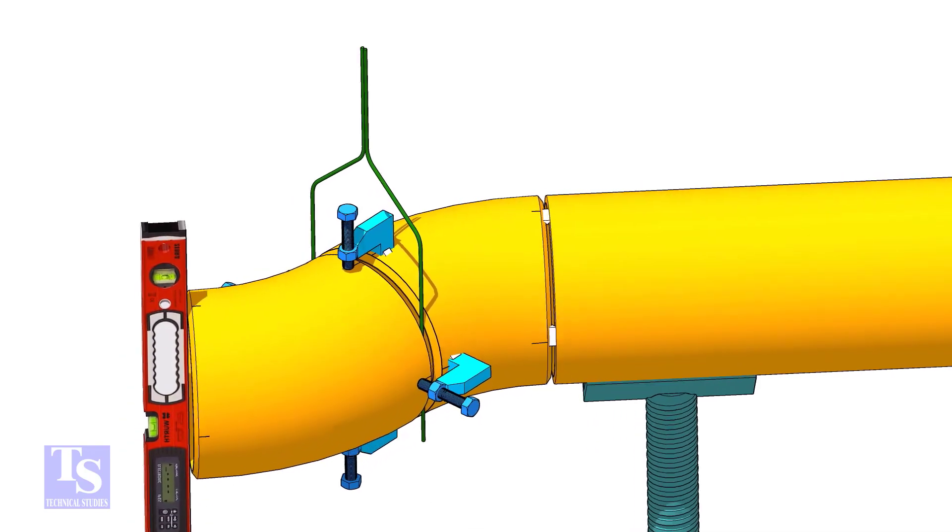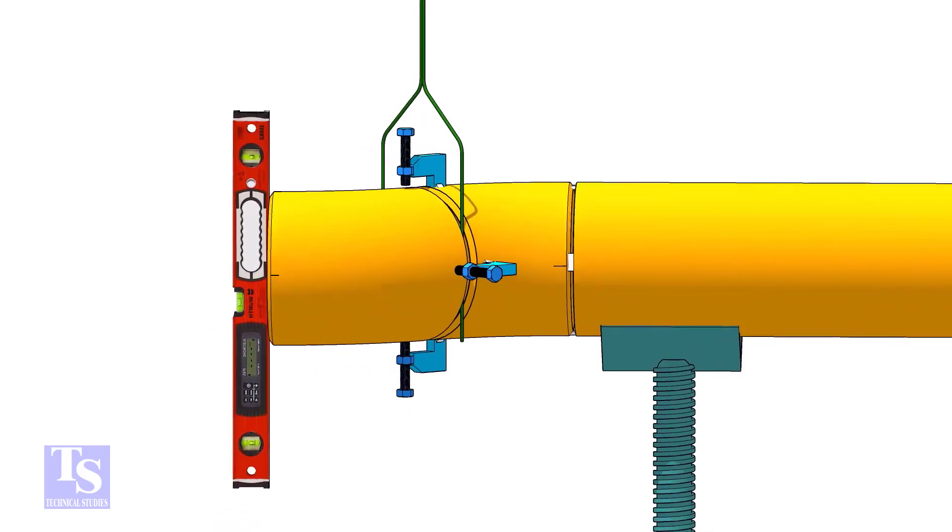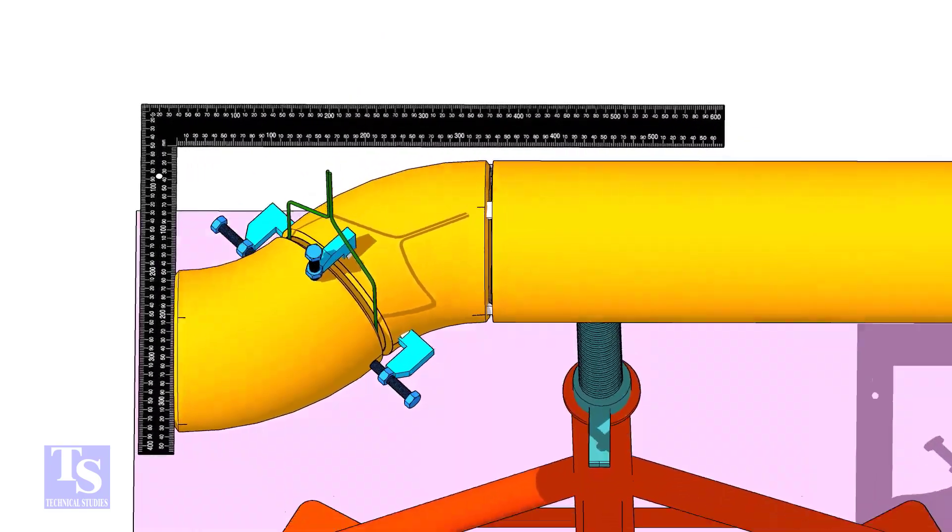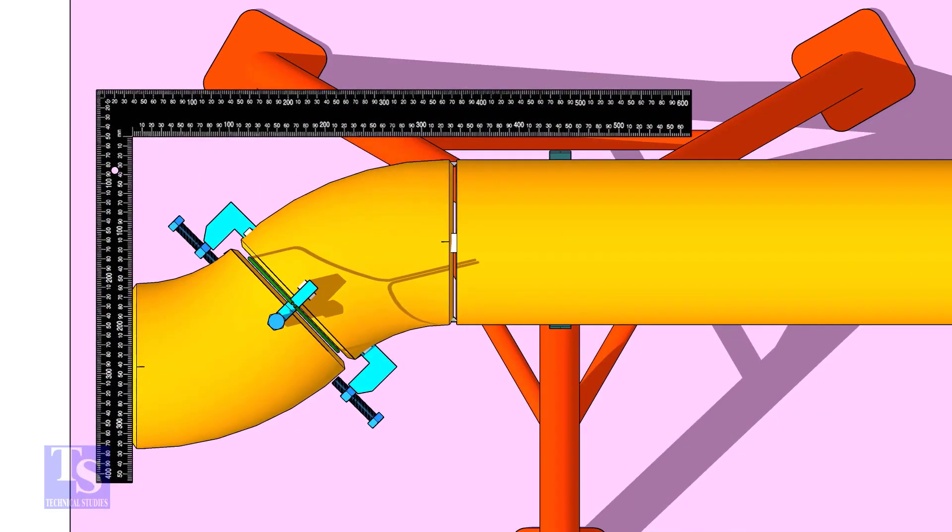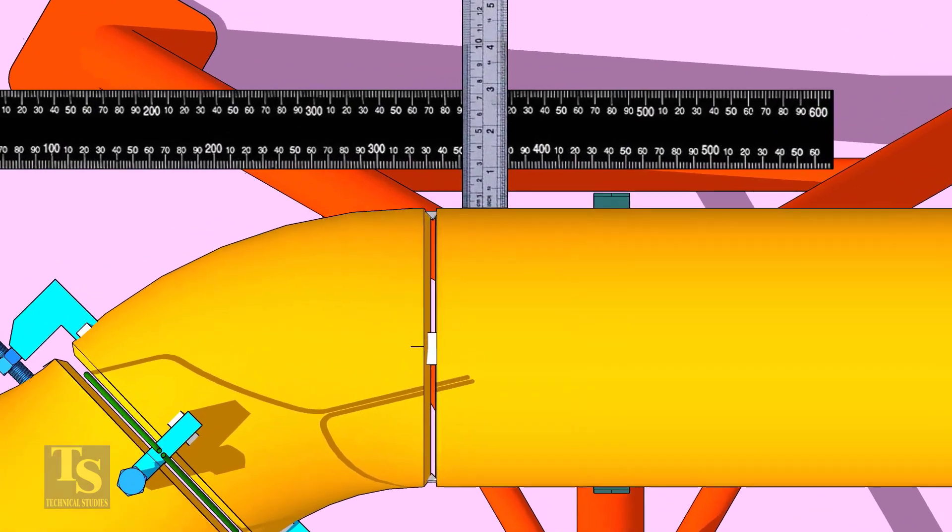Check if the face is level. Put a large right angle on the face of the elbow as shown and check the distance between the pipe and the right angle.